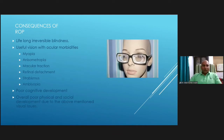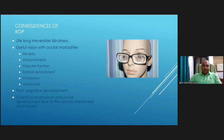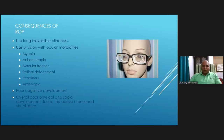ROP can cause lifelong irreversible blindness in a child, which is a major burden. Even with useful vision, children can have morbidities like myopia, anisometropia, macular traction, and predisposition to retinal detachment in future. Vision-related issues can lead to strabismus and amblyopia. As the child grows, lack of proper vision leads to poor cognitive development and overall poor physical and social development — the child falls behind in education, physical activity, and every aspect of development.